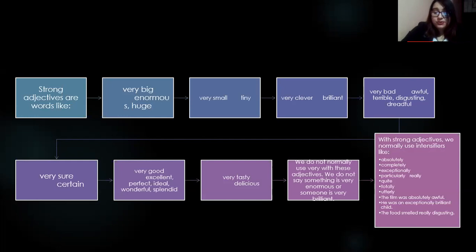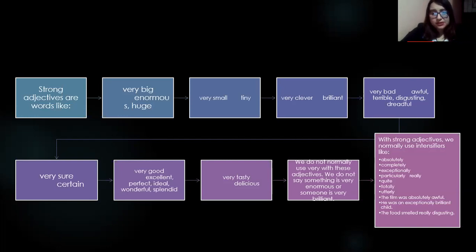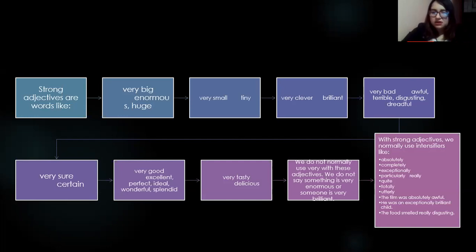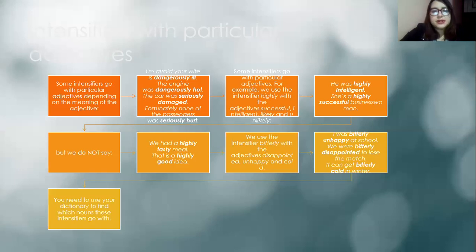Instead of 'very tasty,' use 'delicious.' We don't normally use 'very' with these strong adjectives — we don't say something is 'very enormous' or someone is 'very brilliant.' With strong adjectives, we normally use intensifiers like: absolutely, completely, exceptionally, particularly, really, quite, and totally. For example: 'The bomb was absolutely awful,' 'He was an exceptionally brilliant child,' 'The food is smelling really disgusting.'